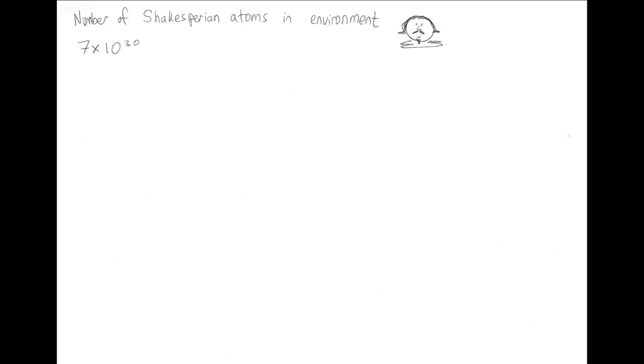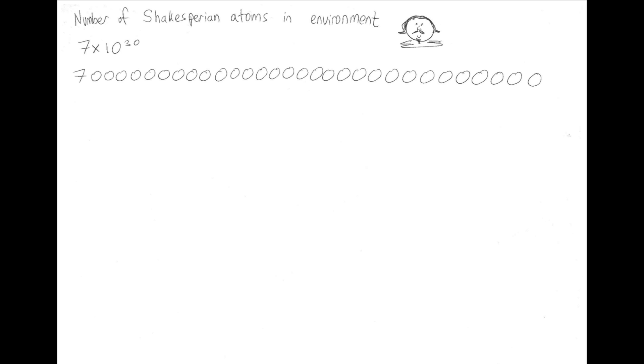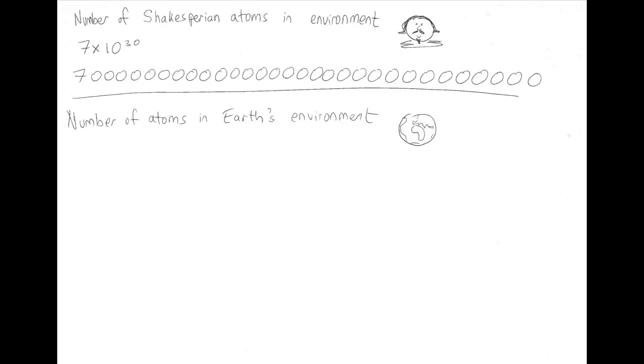To work out the total number of Shakespearean atoms, we can make a few estimations. For example, breath-wise: if we know that Willy lived to the age of 52 and assume that he breathed out about 15 times a minute, we can calculate he probably breathed out about 400 million times in his life. By making estimations like that for the three sources, the Jupiter Scientific team work out that there's probably about 7 times 10 to the power of 30 Shakespearean atoms in the environment. That's 7 with 30 zeros after it.